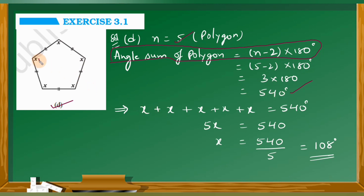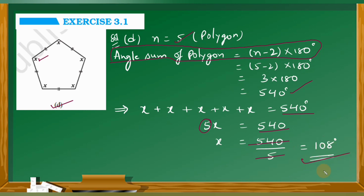Since all angles are equal and there are 5 of them, we have 5x equal to 540 degrees. So x is equal to 540 divided by 5, which is 108 degrees. Therefore x is equal to 108 degrees. Understood, children?